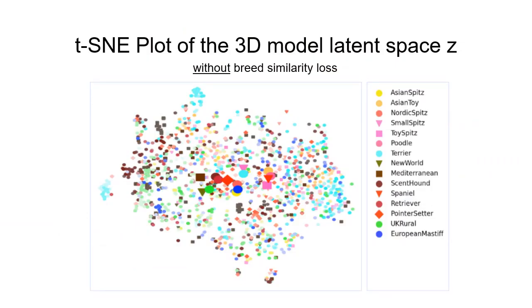Here we project instances of a latent vector Z into a 2D plot. This plot shows the result when we don't use the breed similarity loss. The dots correspond to specific instances of dogs and the colors indicate their clade. Different saturation levels indicate different breeds. The t-SNE plot illustrates how cluttered the latent space is and that the breed shapes are not well separated when we don't use a breed similarity loss.